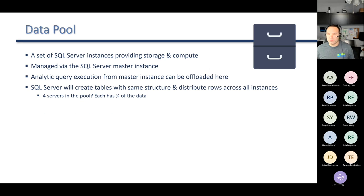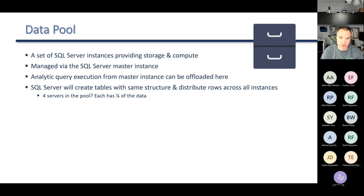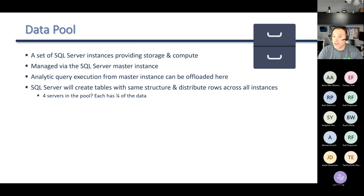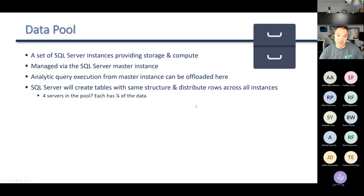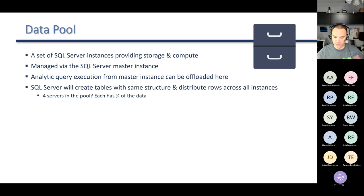Next, we have the data pool. The data pool is a set of SQL Server instances that work together to provide storage and compute, all managed behind the scenes in the Big Data Cluster. When you're creating a Big Data Cluster, you specify how many instances you want in that pool, but then that's controlled by the BDC and you don't have to worry about it. Query execution from the master instance can actually be offloaded to the data pool. You can also place data in the data pool and it gets distributed across all the instances — so if you have four servers in your data pool and a dataset with 40 billion rows, each of those four instances would have one quarter of the data.